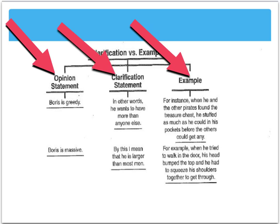So first let's look at the opinion statement. Boris is greedy. Now this can be a topic sentence of a paragraph if you're doing a characterization paper. So if you were going to clarify, which clarification means you're kind of saying it again but in clearer words, in other words, he wants to have more than anyone else. So you're actually clarifying this word greedy. Now how that's different than your example, because now you're going to support it. For instance, when he and the other pirates found the treasure chest, he stuffed as much as he could in his pockets before the others could get any.